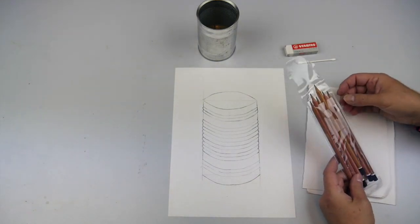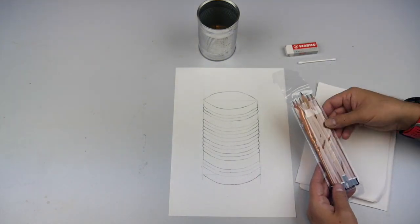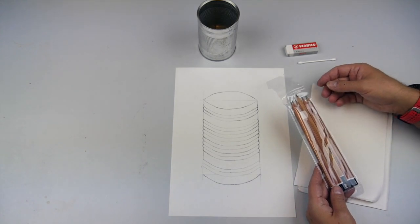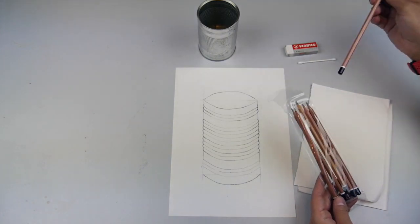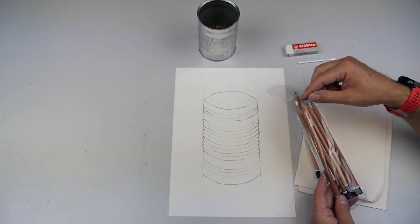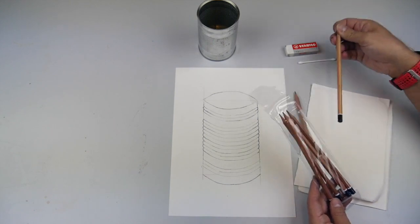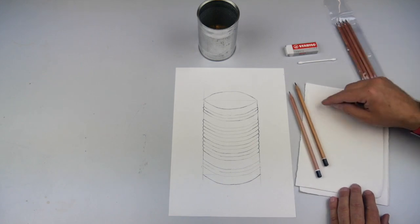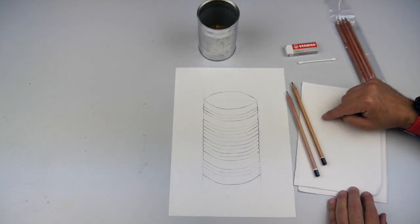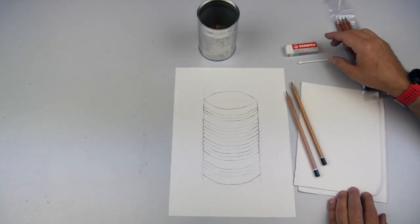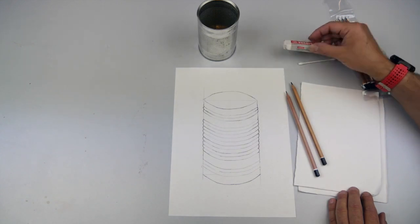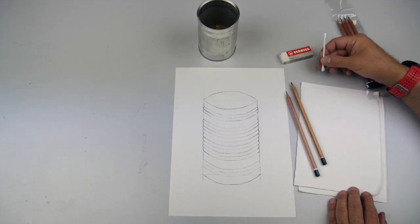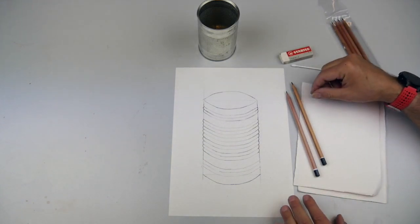I've got my shading pencils. You'll have your own favorites. I tend to use a 2B for general shading and then a 4B for the darker areas. You'll also notice I've got a couple of pieces of scrap paper, an eraser, and a cotton wool bud, which we'll come back to in a moment.